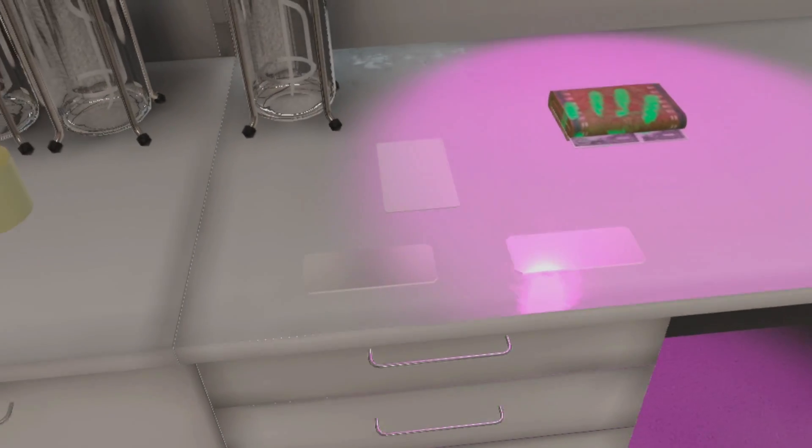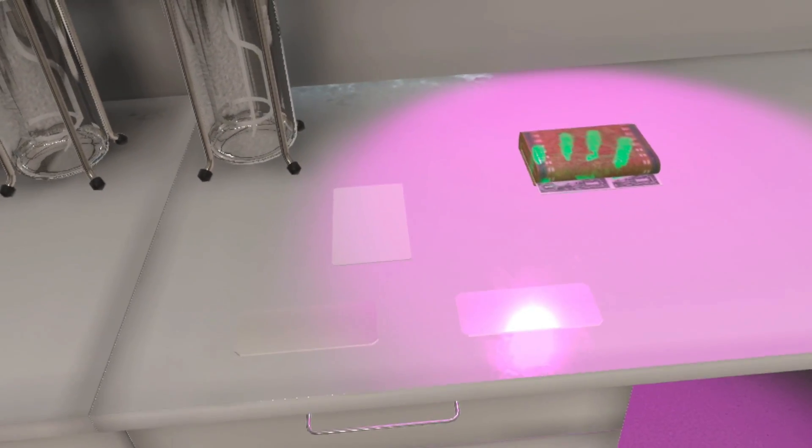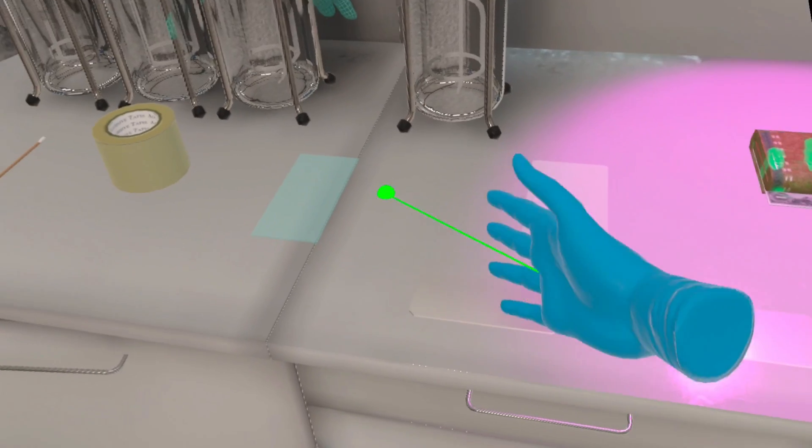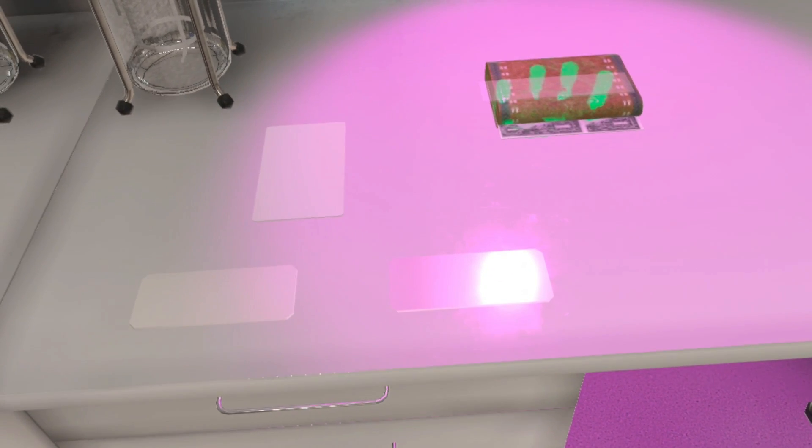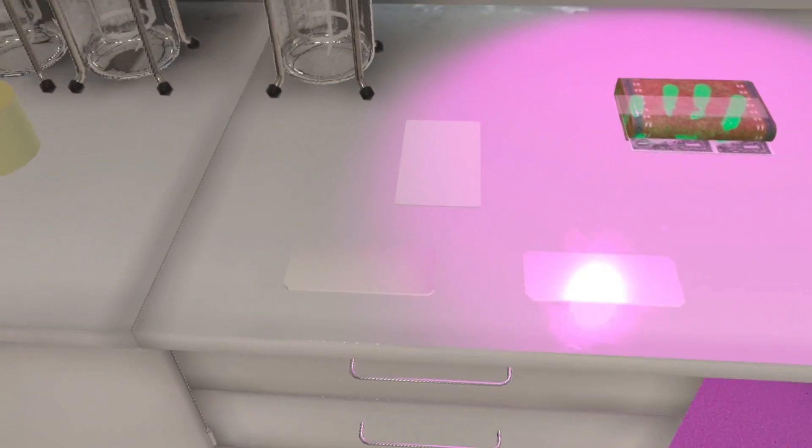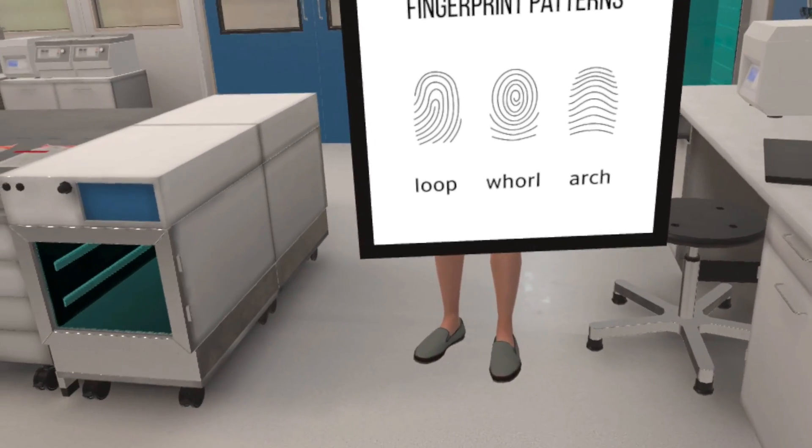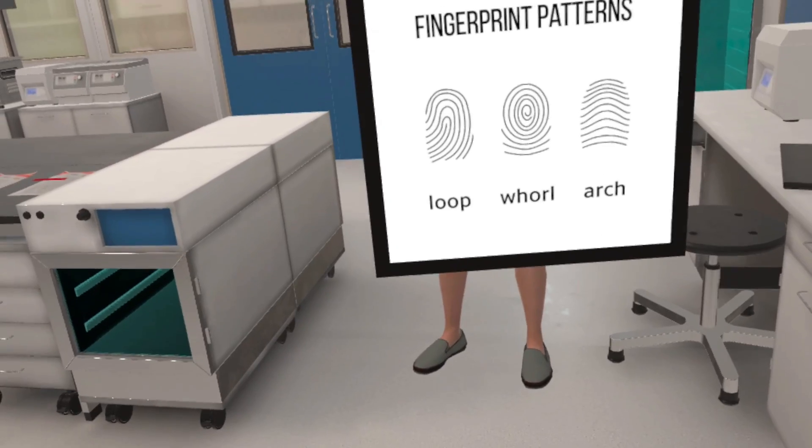Now take the adhesive tape and place it on the wallet to gently lift the visible fingerprint. It is also interesting to know that fingerprints are unique to each individual, yet they can be classified into three main classes which you can see in this image.